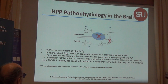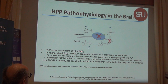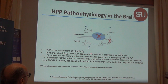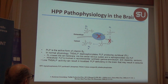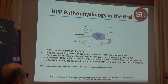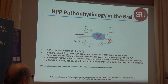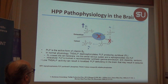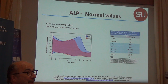Regarding the brain: pyridoxal-5-phosphate is the active form of vitamin B6. In normal physiology, alkaline phosphatase dephosphorylates pyridoxal phosphate, producing pyridoxal, which can cross the cell membrane into the central nervous system. Low alkaline phosphatase activity can result in intracellular PLP deficiency, causing all kinds of neurological disorders, including epilepsy.